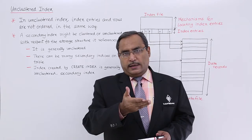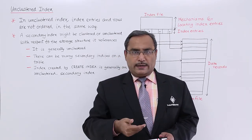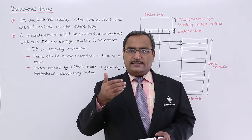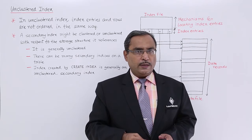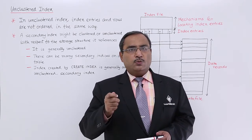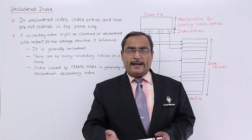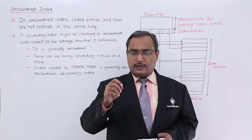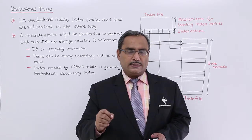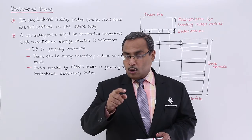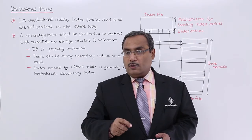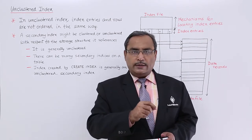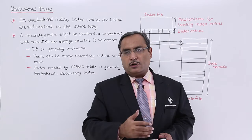Consider one book. At the beginning, we get the chapter index, where the chapters occur in the same order in which they appear in the rest of the book. Now, go to the topic index, usually found at the end of the book. The topic index lists topics with their page numbers, but the alphabetical order of the topic index is not the same as the order in which those topics appear in the main body of the book.